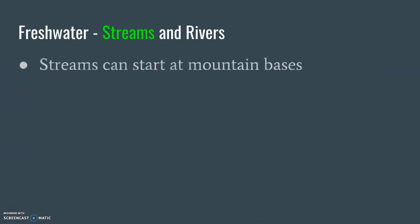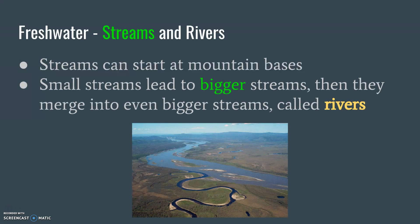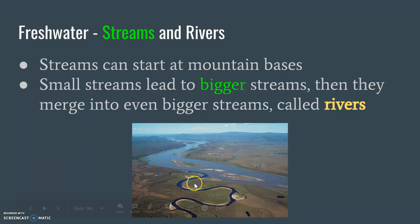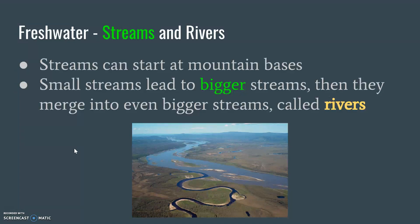Specifically, streams can start at mountain bases. Small streams lead to bigger streams, and then they go into bigger streams called rivers. There are little streams leading into bigger streams, and those bigger streams dump into a river. Little bodies of water actually do eventually flow down into a nice big river somewhere.